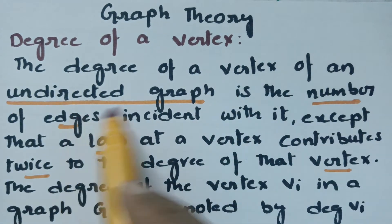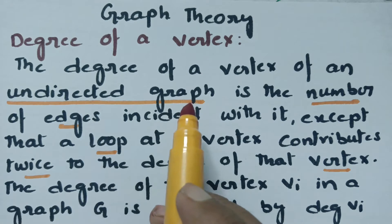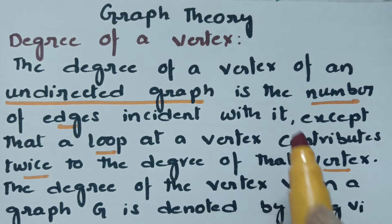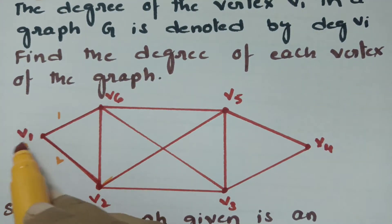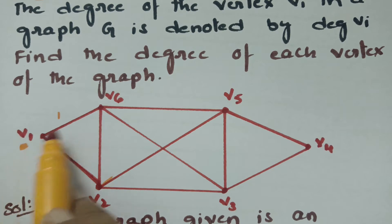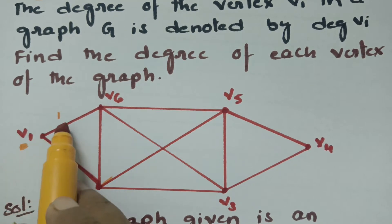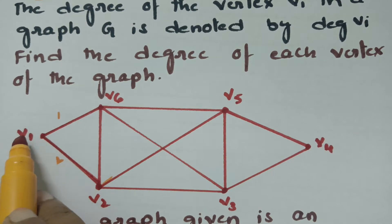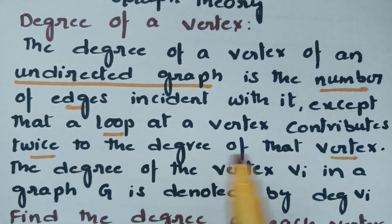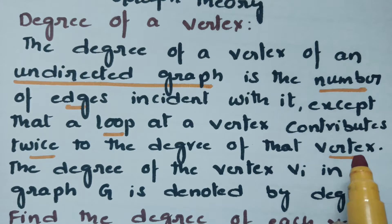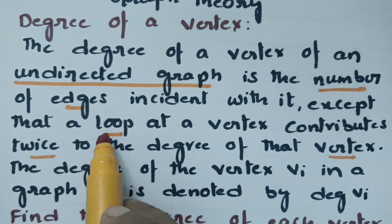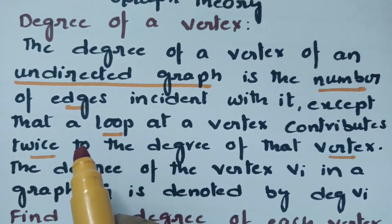The degree of a vertex of an undirected graph — where there is no direction to the graph — is the number of edges incident with it. For example, v1 is a vertex. There are two edges related to v1, so the degree of v1 is equal to 2. Note that a loop at a vertex contributes twice to the degree of that vertex. We have to take the degree of a loop as 2.